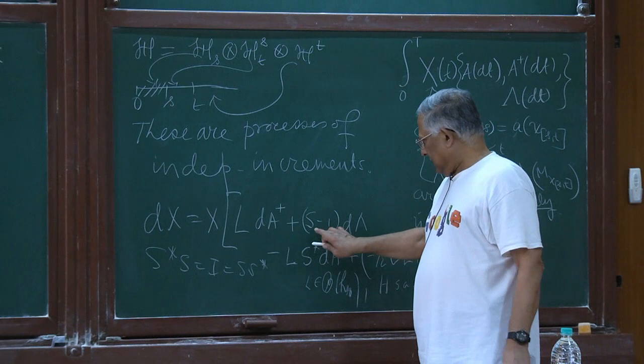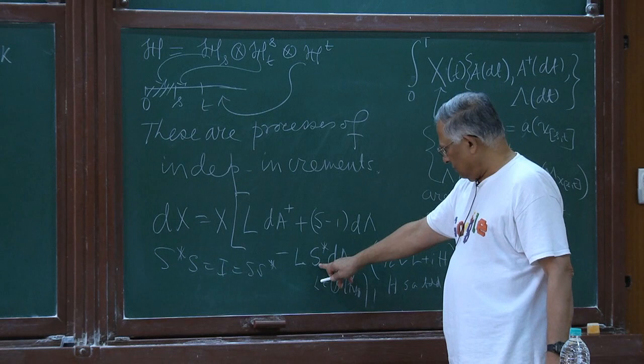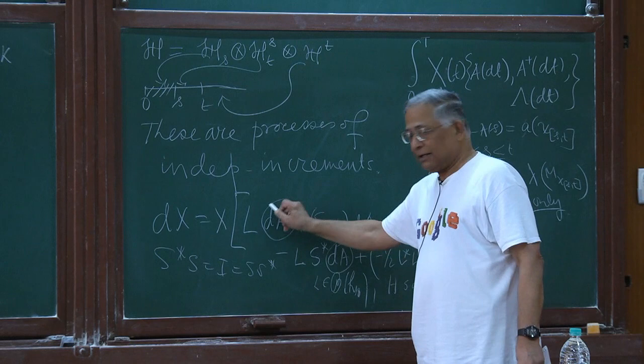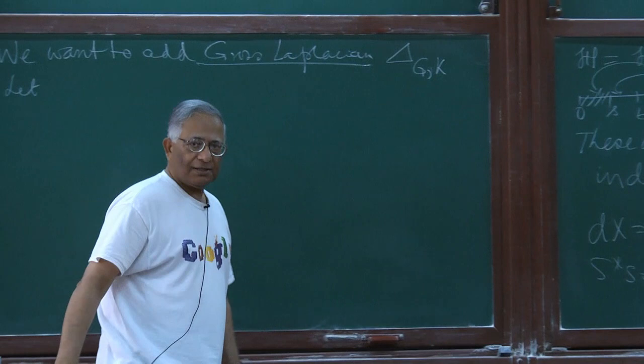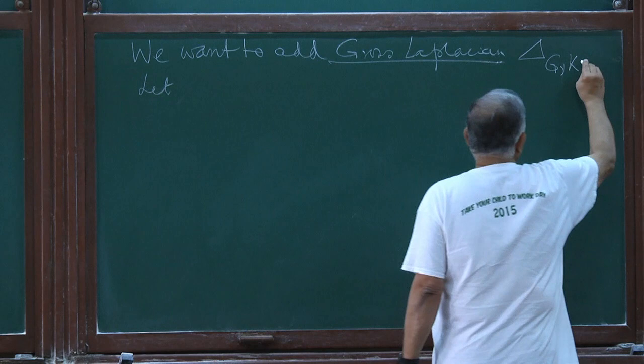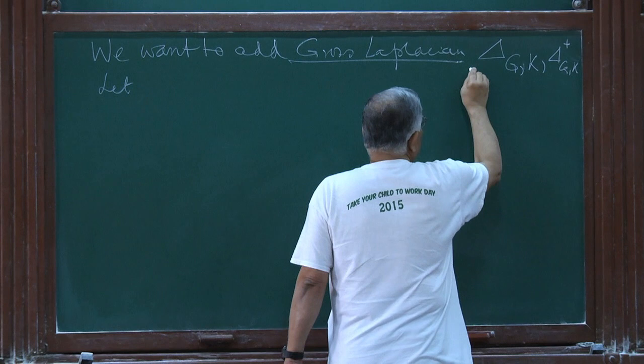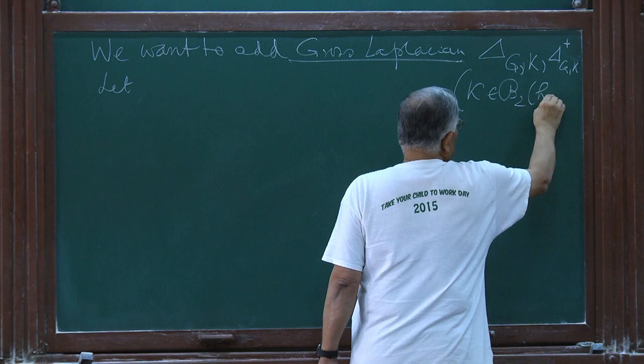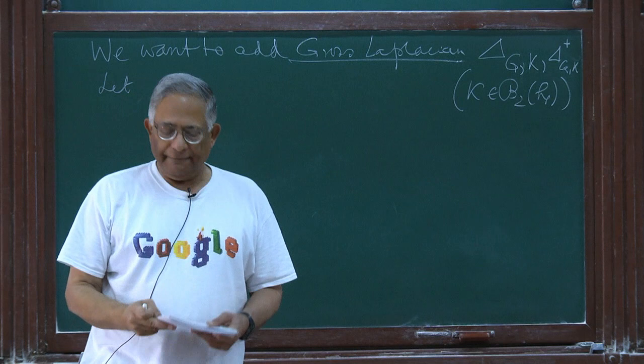We would like to have the same property maintained — that means we will be looking for unitary solutions. If S equals identity, this part disappears and this becomes just minus L. But for unitarity you must have both dA and dA†. Similarly here I will need both the Gross-Laplacian as well as its adjoint — that is a natural thing to expect. In order to have an adjoint I have to add its adjoint as well, and I have remarked that for this K has to be Hilbert-Schmidt in the base space.